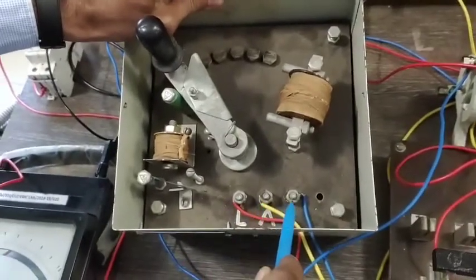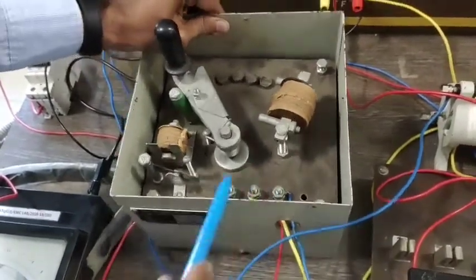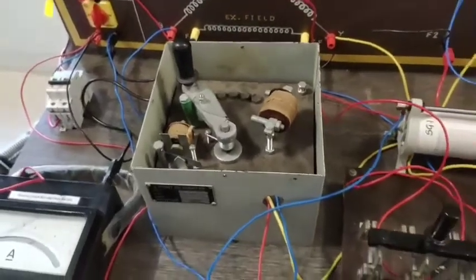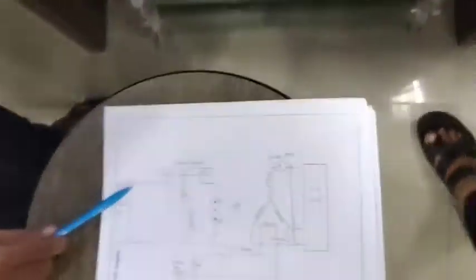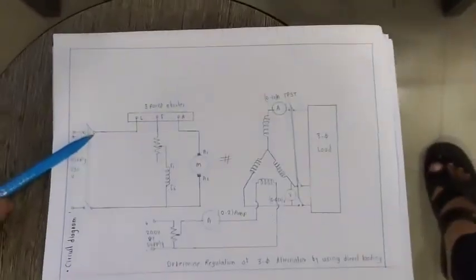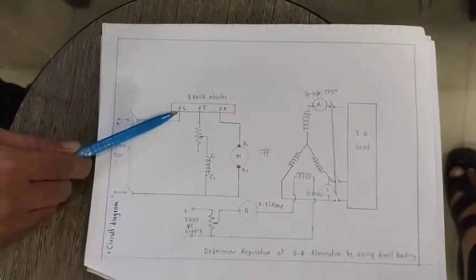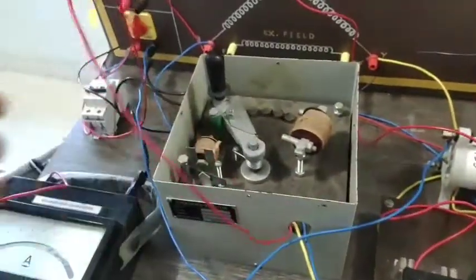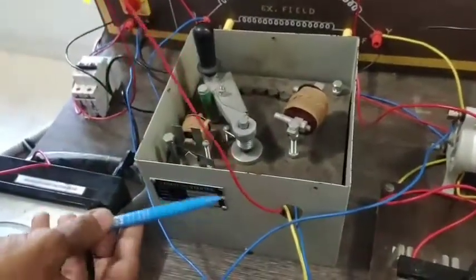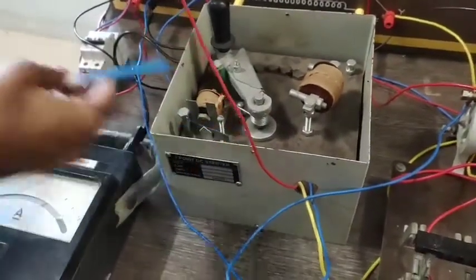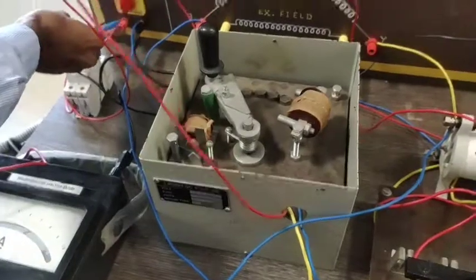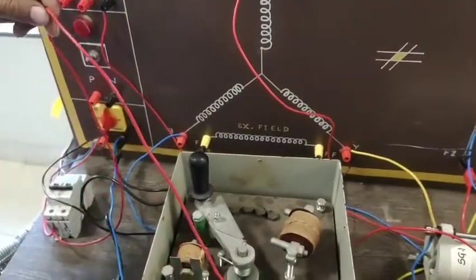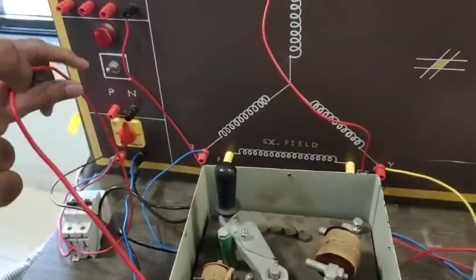Let us see the connections one by one. The plus terminal is connected to the L terminal of the starter. You can see here this red color wire — L is connected to the plus terminal here. This is the first connection.